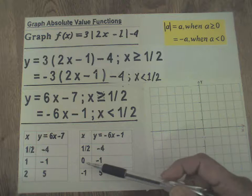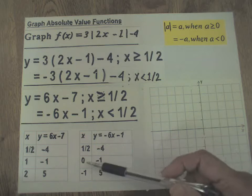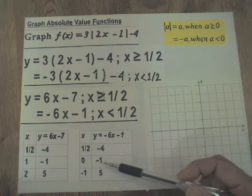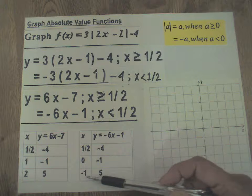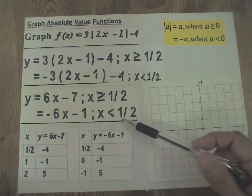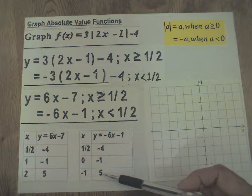Okay, other points. Zero works. Zero is less than 1/2. When x is zero, y is -1. And when x is -1, -1 also works. It's less than 1/2. Then y is 5.